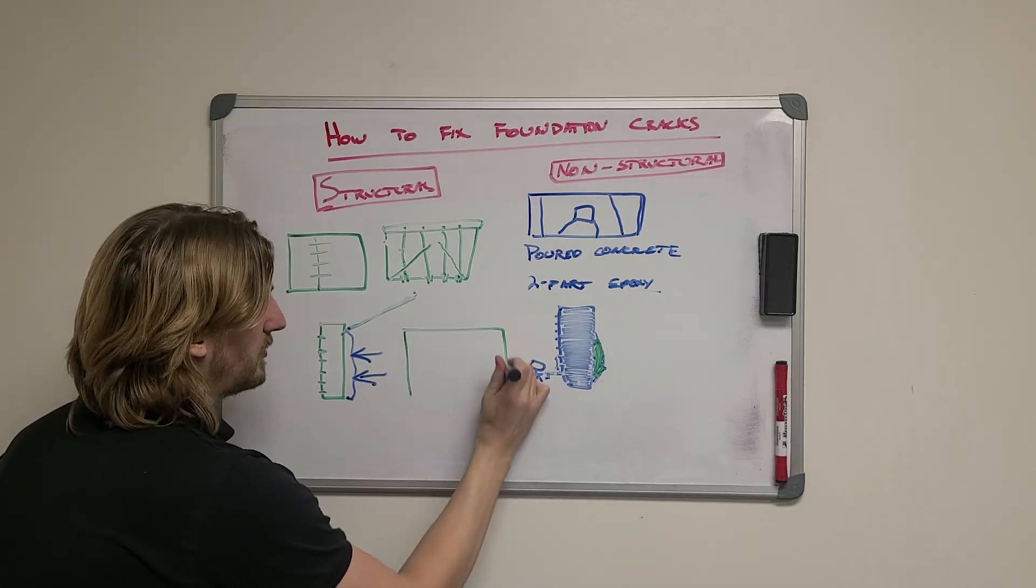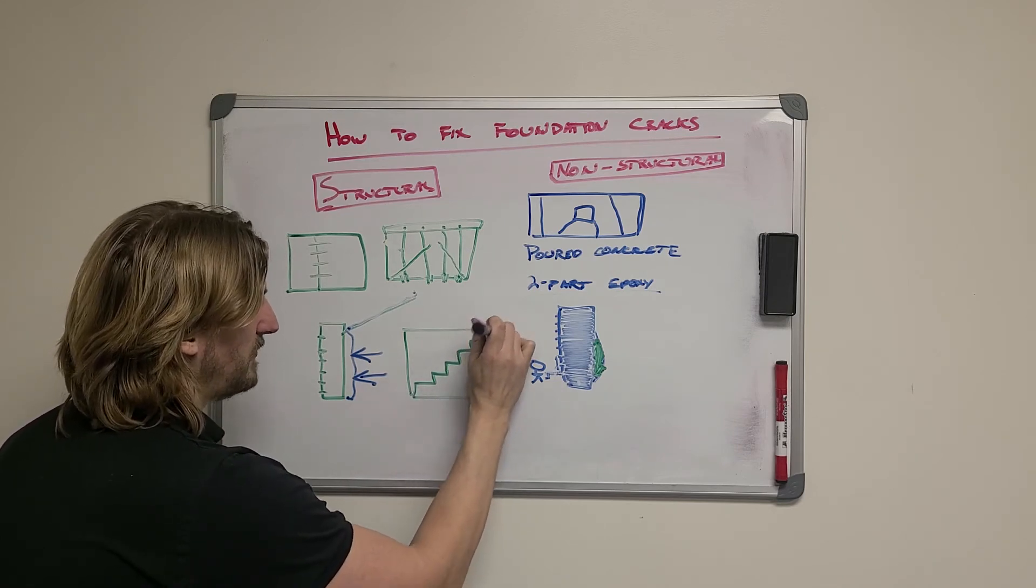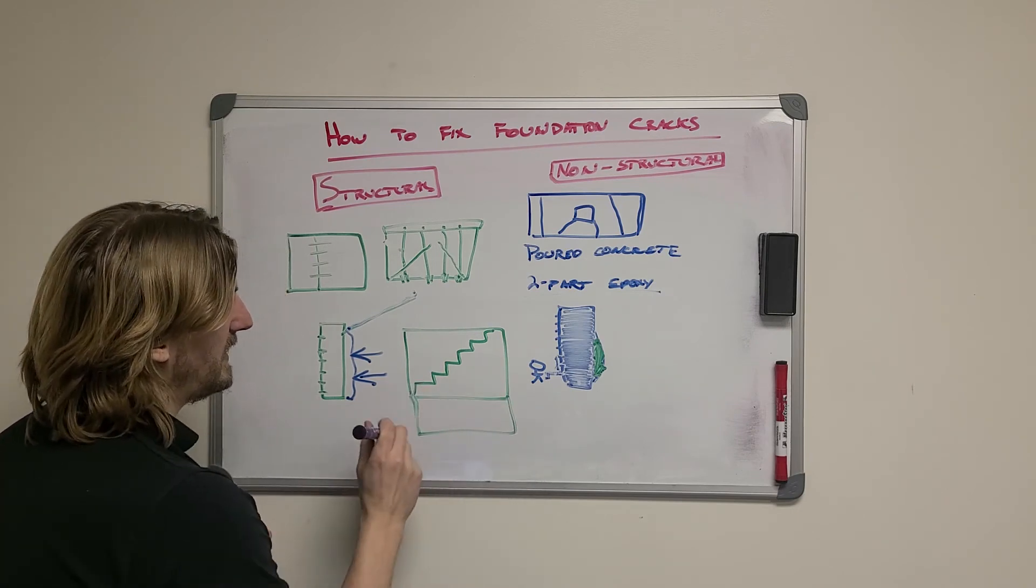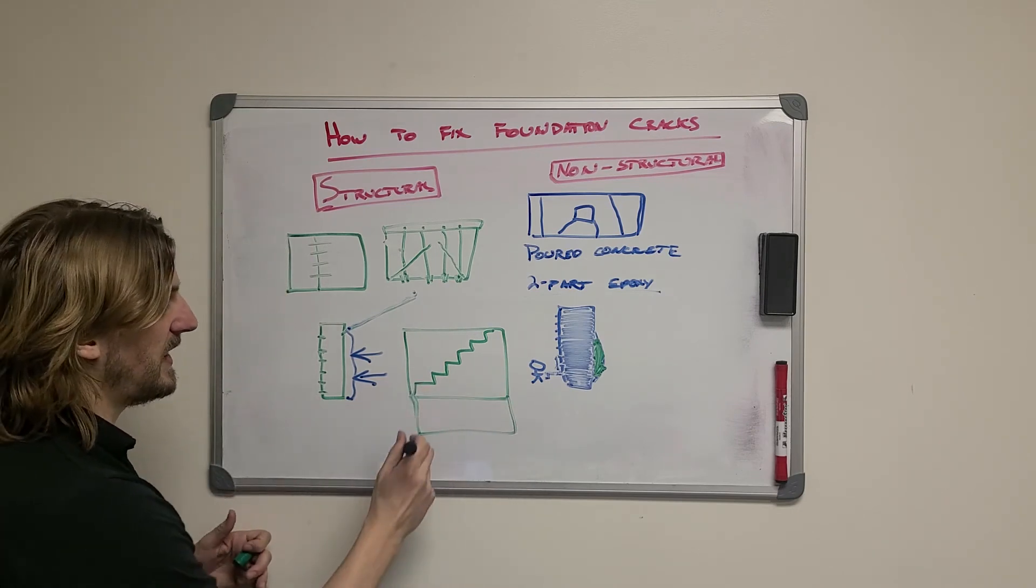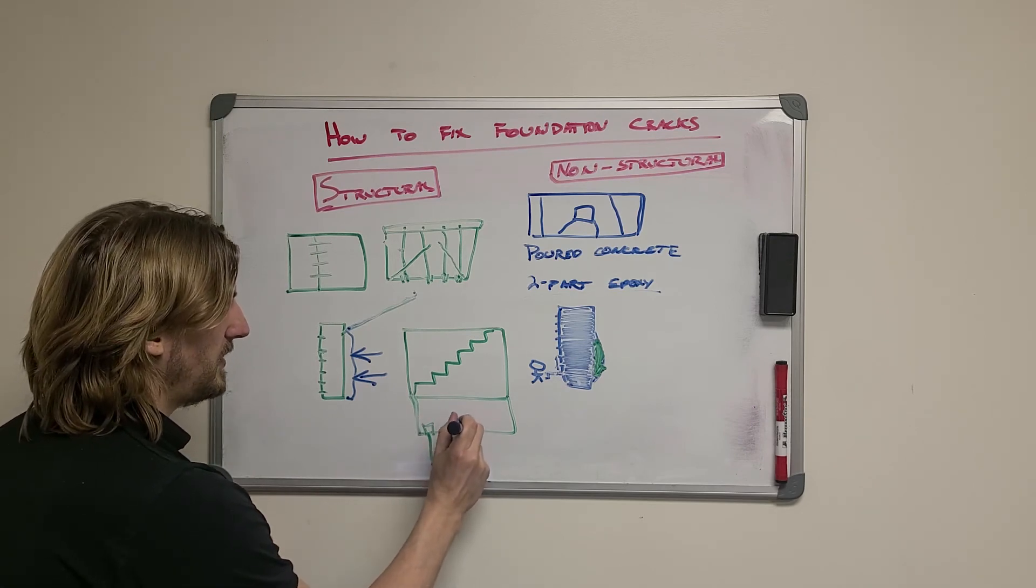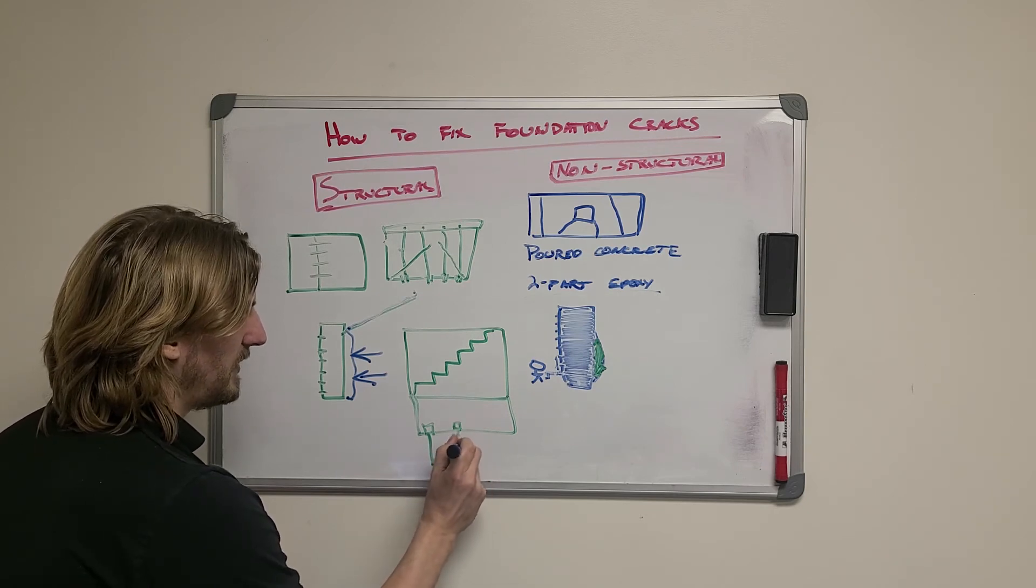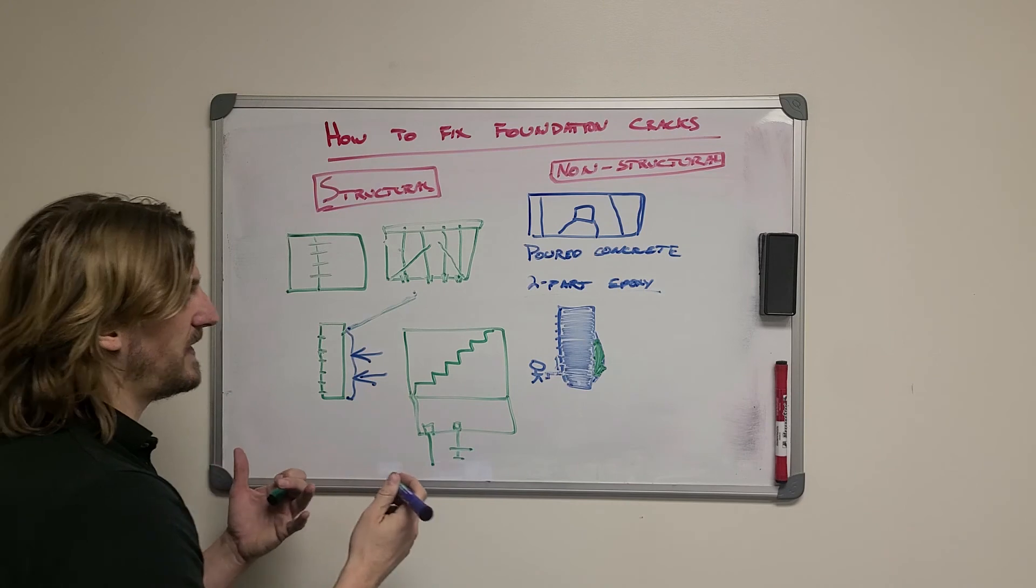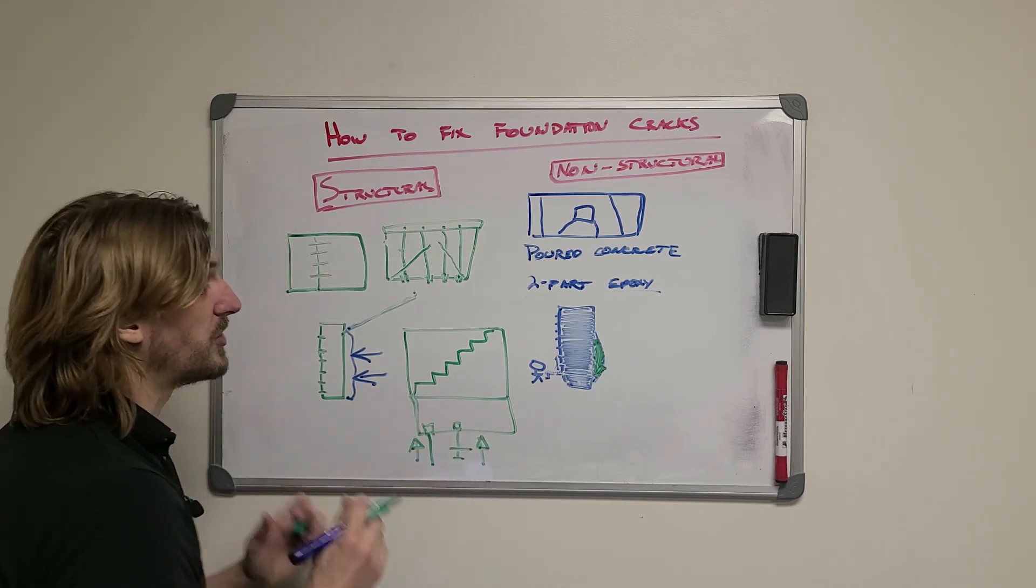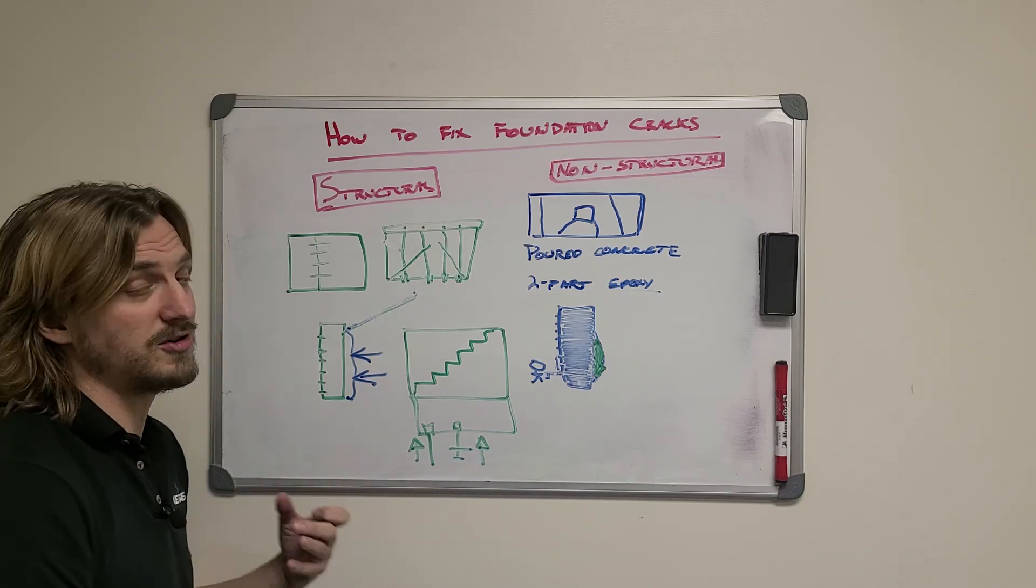And then another typical situation we see is the stair-step bricking crack above your foundation wall that usually ties down to a crack in the wall. And so in this case, we'll install steel piers, whether they be push piers or whether they be helical piers with what we call an A and a B plate that are screwed into the ground to give that foundation support and then actually push upwards on the foundation to create that stability that was missing in the first place or degraded over time.